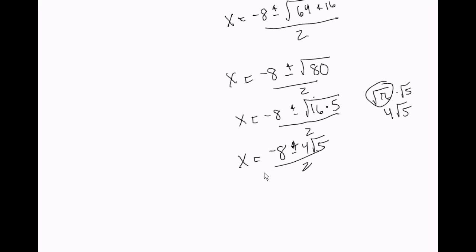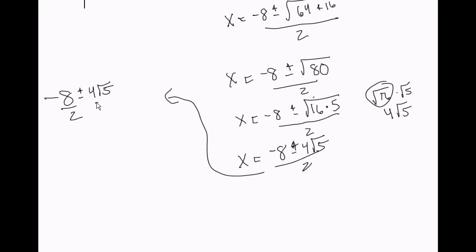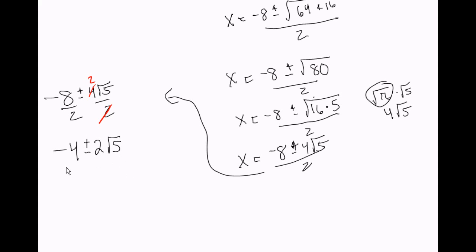We have negative 8 plus or minus 4 square root of 5, both over 2. Splitting the 2 into each term: negative 8 divided by 2 is negative 4, and 4 over 2 gives us 2. So the answer is x equals negative 4 plus or minus 2 square root of 5.